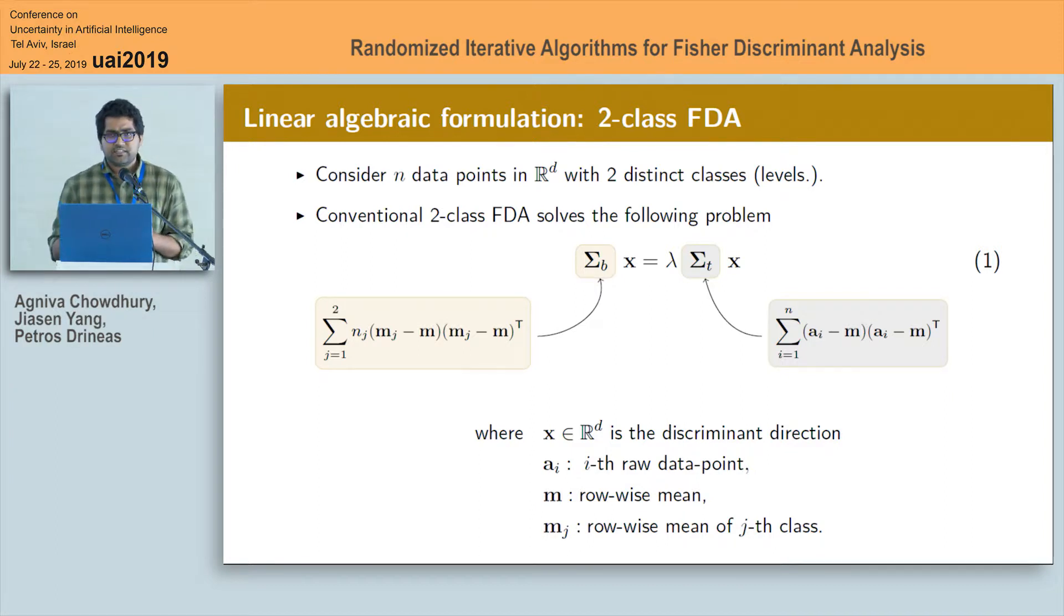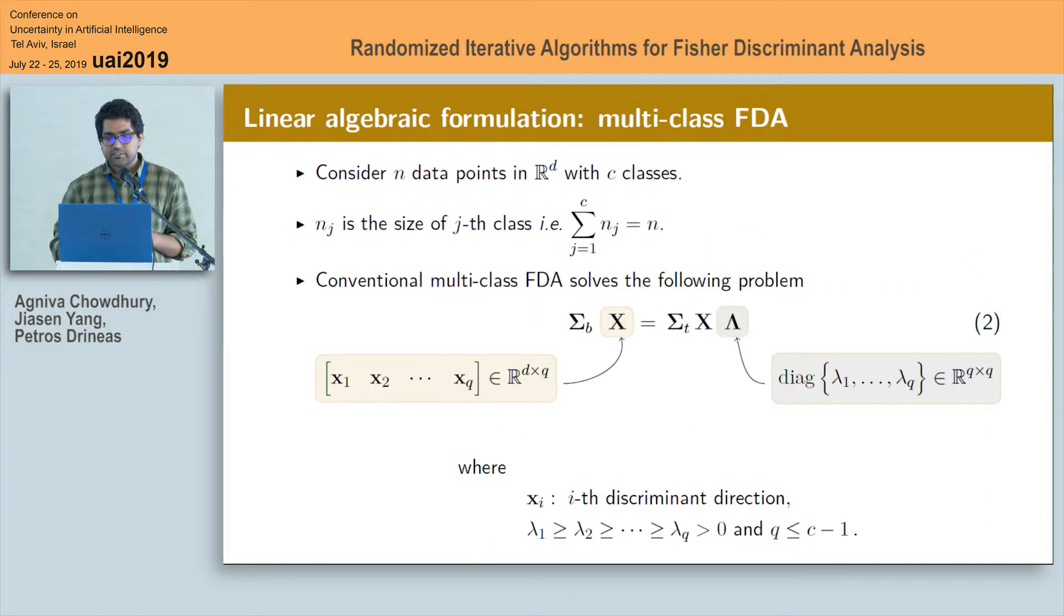Next, we further extend this from a 2 class problem to a multi-class problem with C distinct classes. In that case, this particular formulation in equation 1 can be expressed in a matrix form as in equation 2 where X is now a matrix of all the discriminant vectors we are interested in and lambda is a diagonal matrix with the corresponding non-negative lambdas arranged in a non-increasing order.